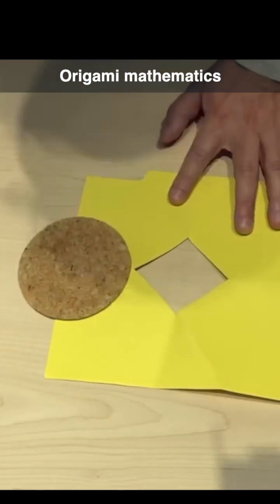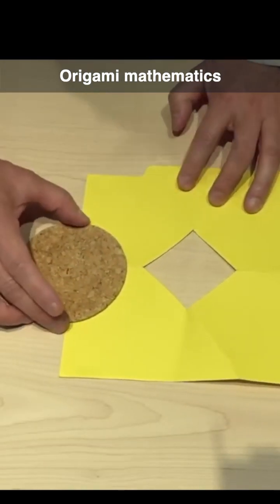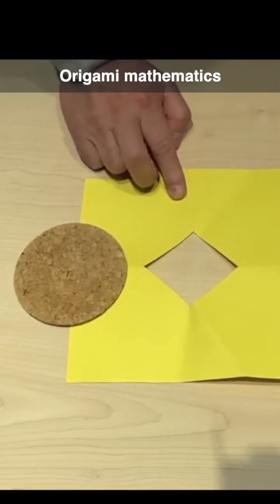When you put one next to the other, obviously the diameter of the circle is greater than the diagonal of the square hole.